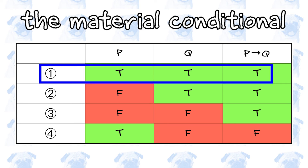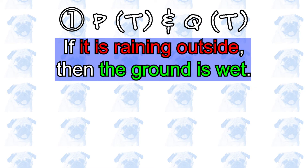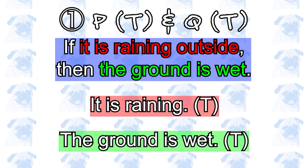Case one should be pretty straightforward. Consider the conditional statement: if it is raining outside, then the ground is wet. You look out the window and see it is indeed raining — therefore, the antecedent is true. You also see that the ground is wet — therefore, the consequent is true. In this case, you should have no problem saying that the conditional statement as a whole is true.